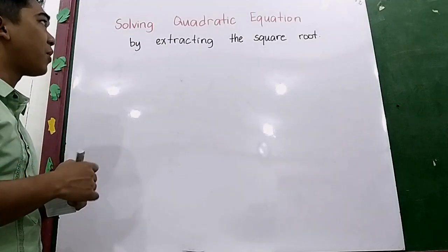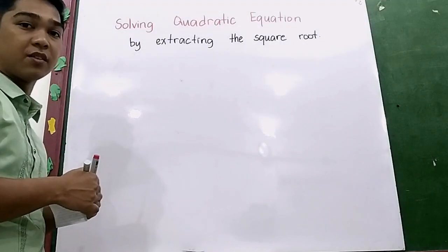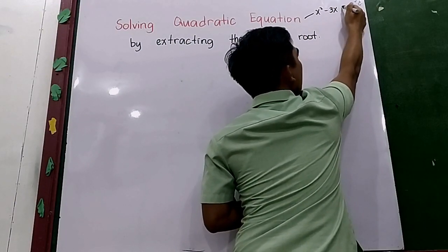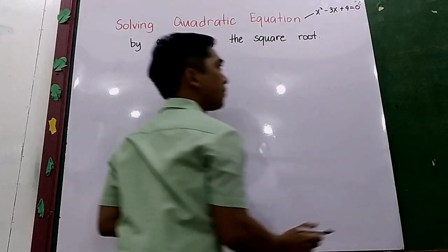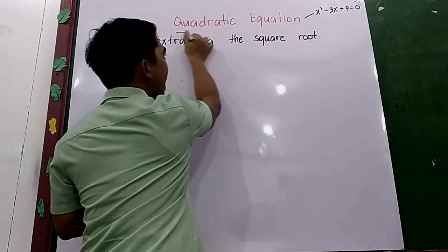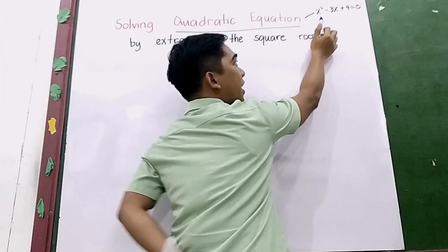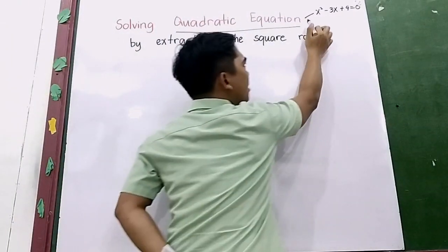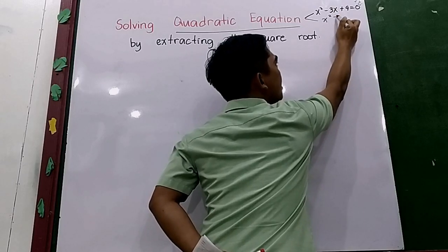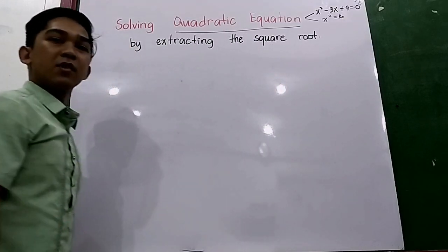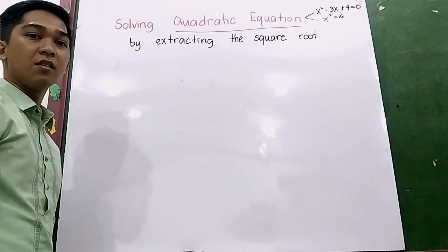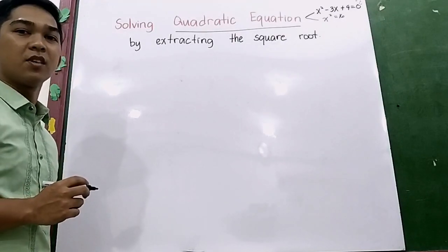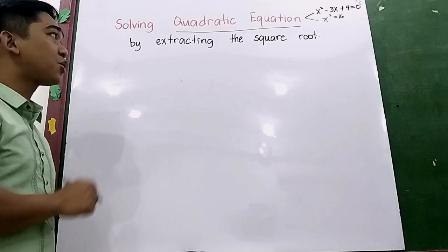Let's first have a recall about examples of quadratic equations. x squared minus 3x plus 4 is equal to 0 — that is an example of a quadratic equation, so our exponent is 2, meaning it is in quadratic form. Another example: x squared is equal to 16. It has a degree of 2, therefore it is quadratic. Now, how do we solve a quadratic equation by extracting the square root?